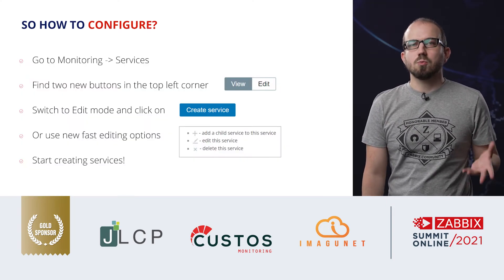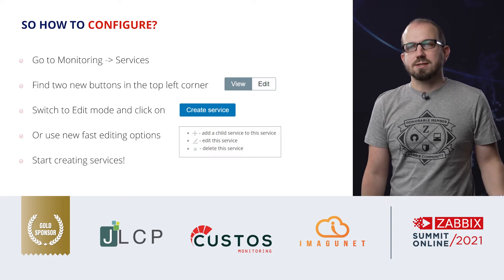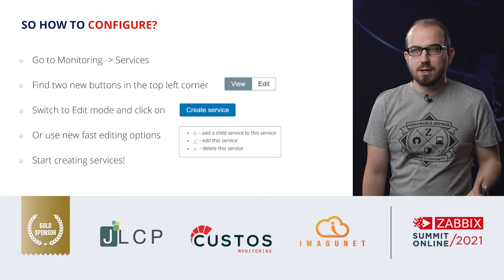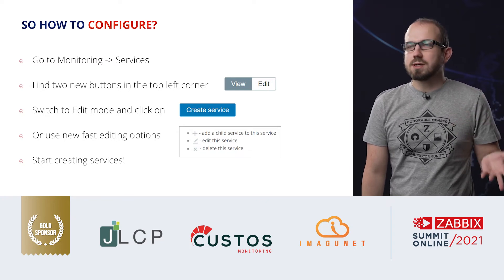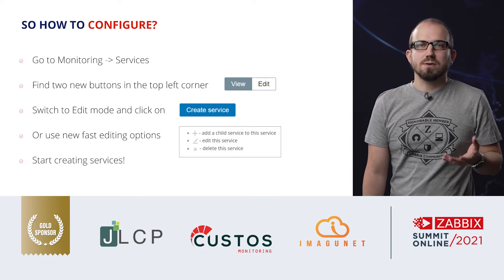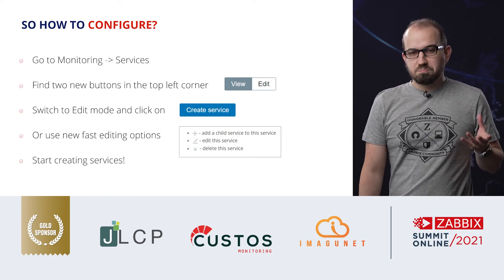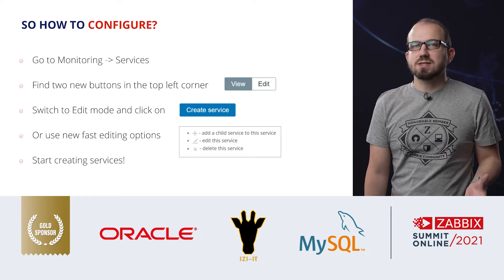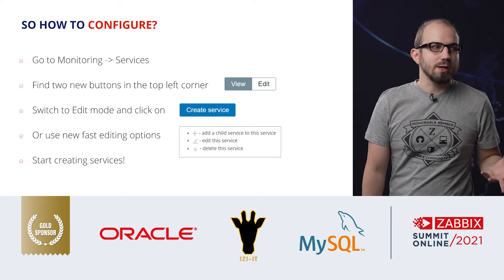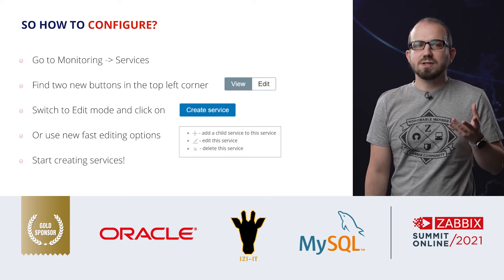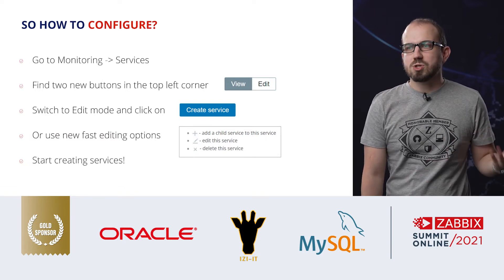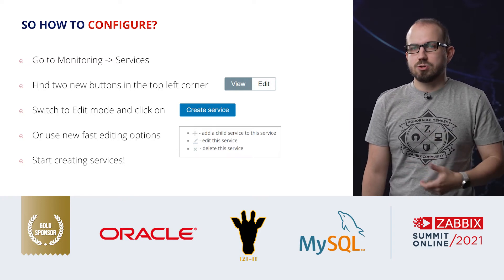Let's take a look at how it's configured in 6.0. We start by going to the monitoring services, where we can define services. You don't need to start with a root service — you start with whatever you want, and it's as simple as clicking just two buttons. You have a View button, which allows you to view the services, and an Edit button, which allows you to edit the services. Just switch to the Edit button, click on Create service, and create a service — define what it is, who will be using it, what defines it, how and when it must be up. You don't even need to click Create service; you can use the newly added fast editing options, where you can instantly add child services, go to editing of the service, or simply delete the service.